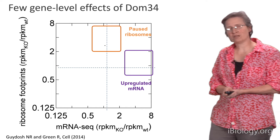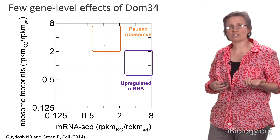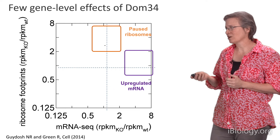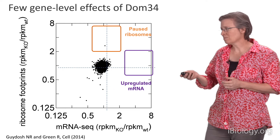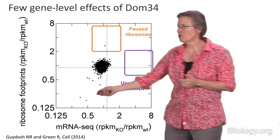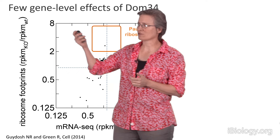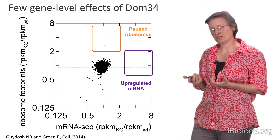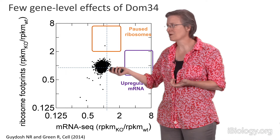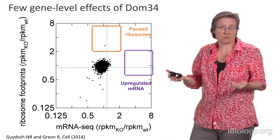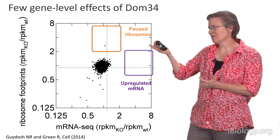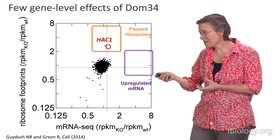Looking globally at our transcriptome, we asked whether any genes showed increased ribosome reads in the DOM34 deletion strain relative to wild type. Plotting mRNA-seq reads and ribosome footprints across all genes, almost all come out with approximately equal read counts — around 1 — in both strains. There is one exception: a gene known as HAC1, a transcription factor that turned out to be our key positive result telling us how DOM34 functions in the cell.